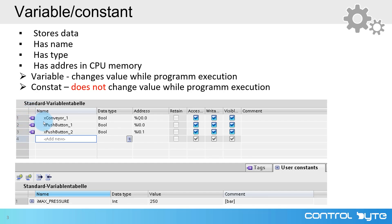Here you can see the tag table with some variables defined. I have defined a variable for the conveyor — this is the output variable — and I have defined two variables for push buttons. All those variables are declared as boolean data type, which means they can have a value of zero or one, true or false. Here you can see the address of those variables. X_Conveyor1 is declared as an output variable at address 0.0.